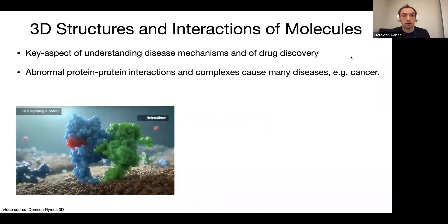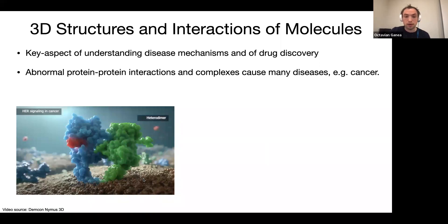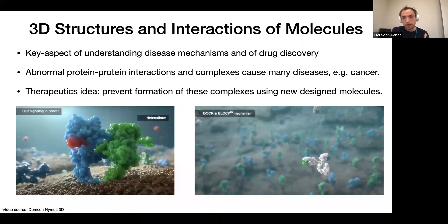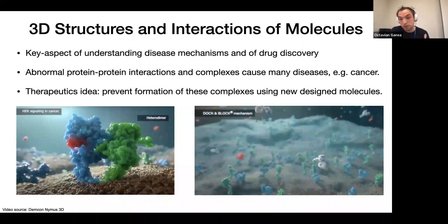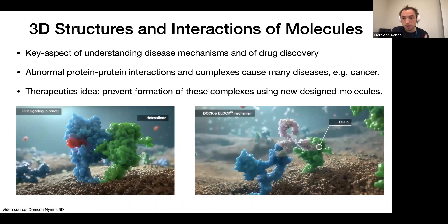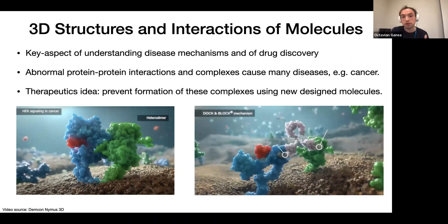As you might already be familiar with, abnormal protein-protein interactions and protein-protein complexes cause many diseases, for instance cancer. You see here one instance of some proteins — HER proteins — which are on the surface of tumor cells, and their interaction triggers metastasis and tumor spread. An obvious therapeutics idea is to prevent the formation of these complexes by designing special molecules, such as an antibody which attaches to these two HER proteins and prevents their interaction.